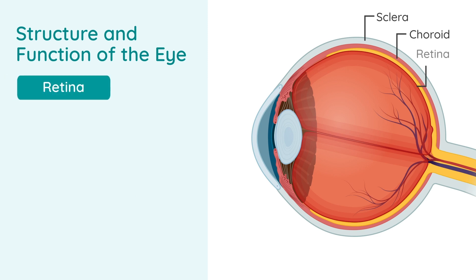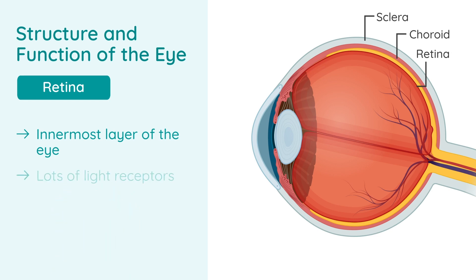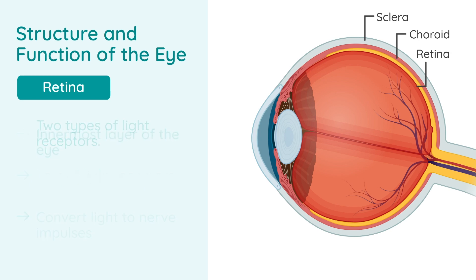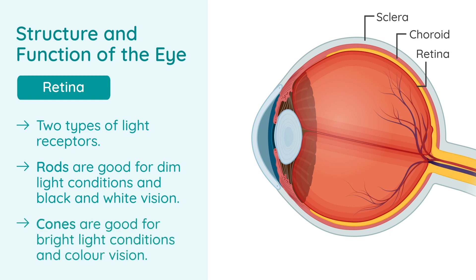The retina is the innermost layer of the eye. When an optician looks into your eye, this is what they're looking at. The retina has lots of light receptors which convert light to nerve impulses. There are two types: the rods, which are good for dim light conditions and black and white vision, and the cones, which are good for bright light conditions and color vision. A simple way to remember which is which — think rods has a D in it, dim has a D in it.